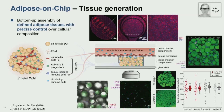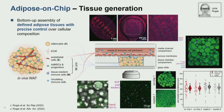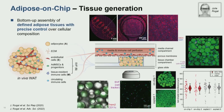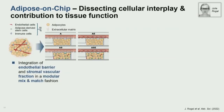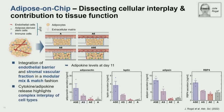The bottom-up assembly allows us to play around — we can remove one cell type or add only certain cells — and we can do this in a patient-specific way. From one patient we can generate 50 different systems with different compositions and look at what different cell types contribute to tissue function. This is actually very interesting because it's not just a superposition of individual cell type functions that makes the tissue function.